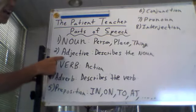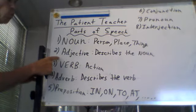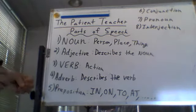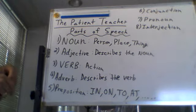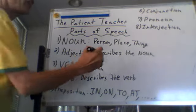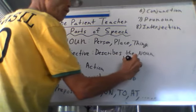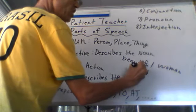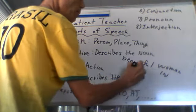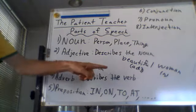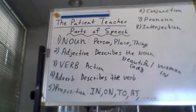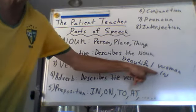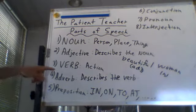An adjective is the second one — we use it to describe the noun, anything that gives us more information about the noun. So you could have a beautiful woman — that would be the adjective, and that would be the noun — or a handsome man. I used to say in my classes, 'a bad teacher,' right? That would make everyone laugh.